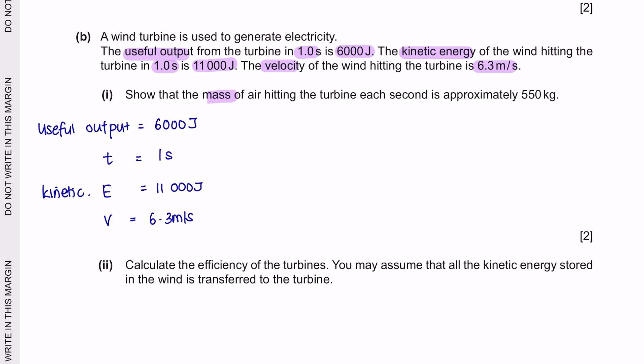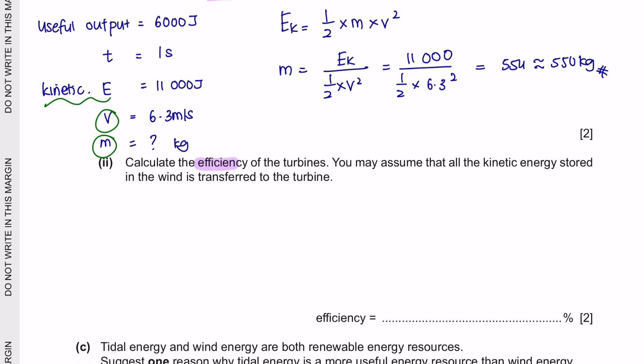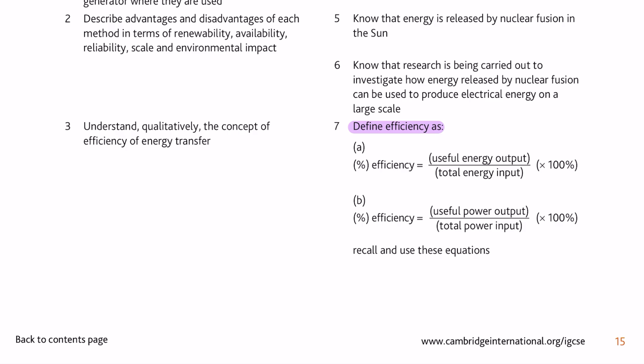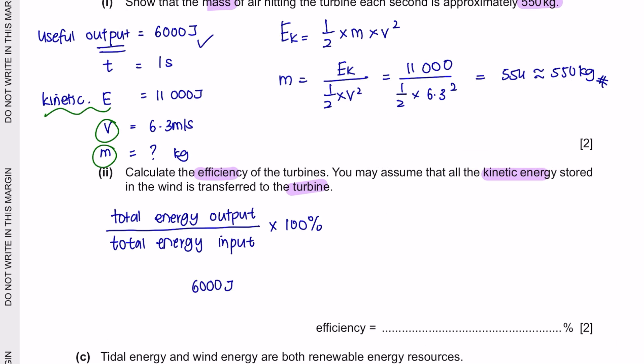Part 1: Show that the mass of the air hitting the turbine each second is approximately 550 kilograms. So the formula related to mass, velocity and kinetic energy would be 1 over 2 times mv squared. So rearranging mass as the subject, we would get this. So let's just substitute all the values that we have and we will get a mass of 554 which is approximately 550 kilograms. Next question part 2: Calculate the efficiency of the turbines. You may assume that all the kinetic energy stored in the wind is transferred to the turbine. So the formula to calculate efficiency would be the useful energy output over the total energy input multiplied 100%. Now the total energy output has been given to us which is 6,000 joule over the total energy input which is your kinetic energy multiplied 100%, we would get 54.55, so rounding this off to two significant figures would be 55%.